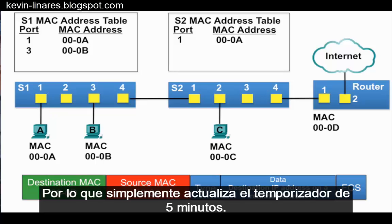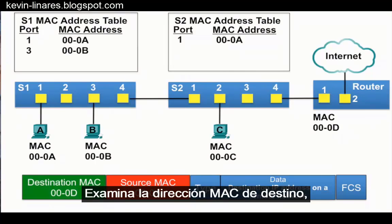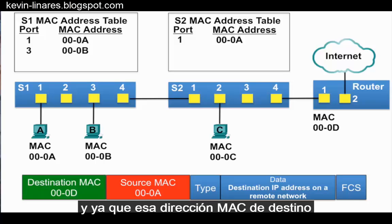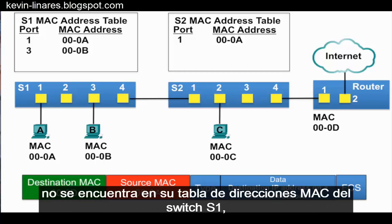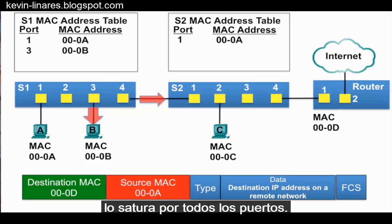S1 then examines the destination MAC address, and because that destination MAC address is not in the MAC address table of switch S1, it floods the frame out all ports.